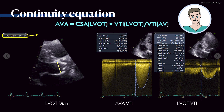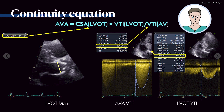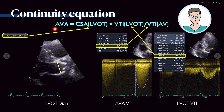Now let's discuss the continuity equation and what we found in this patient. For the continuity equation, we need the VTI — the area under the curve of the signal. This is the aortic valve signal, and the area here is 150.64 centimeters. This has to be put into the formula: the aortic valve area continuity equation, where you need the cross-sectional area of the LVOT, the VTI of the LVOT, divided by the VTI of the aortic valve.